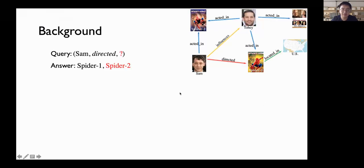In KG reasoning, we care about predicting the missing entities given the query entity and the query relation. For example, we aim to predict Spider-2 given the query Sam directed in the KG.